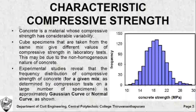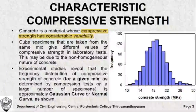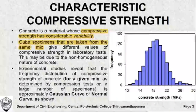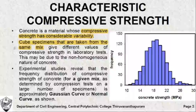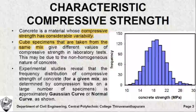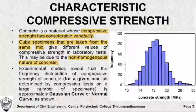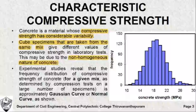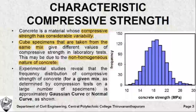Concrete, as we already discussed, has great variability in its compressive strength. By variability of compressive strength, I mean that cube specimens prepared from the same mix are taken and the compression test is performed. You find that each specimen gives different values of compressive strength. This is primarily due to the non-homogeneous nature of concrete. Concrete is a heterogeneous mixture of different materials of different properties, and even from the same mix it shall give different values.